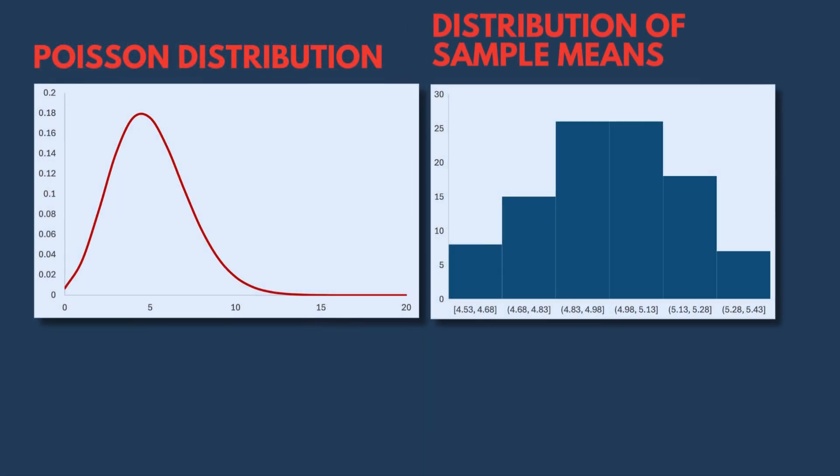The mean of the sample means closely approximates the true average of 5 customers arriving per hour, while the standard deviation of the sample means is noticeably smaller than that of the original Poisson distribution. This demonstrates the central limit theorem's principle that averages of samples tend to be less variable than individual observations.